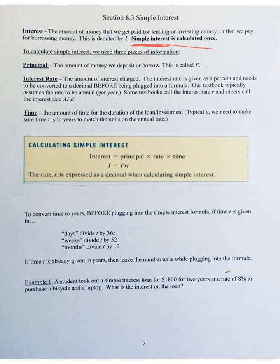For the simple interest formula — which we can see in the yellow box in the middle of the screen — we're going to need three pieces of information. First, we need to know the principal, which we'll call capital P. This is going to be the amount of money that we deposit or borrow, depending on whether it's an investment or borrowing situation. That's the original amount of money deposited or borrowed.